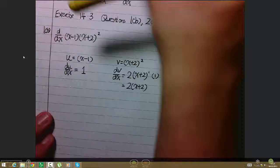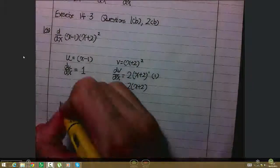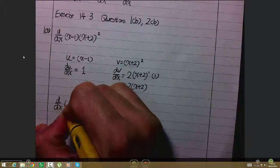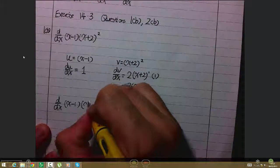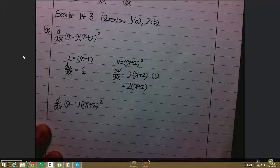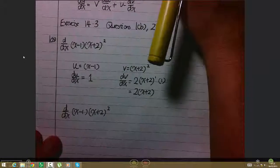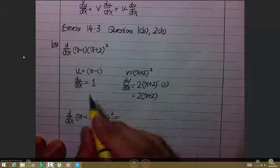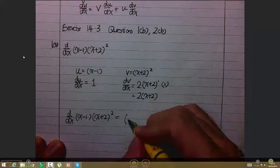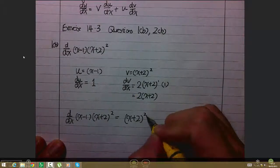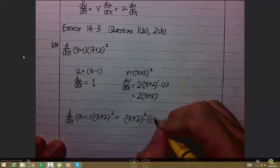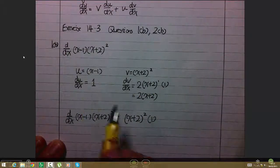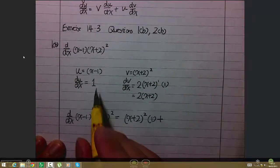Then, carrying on with this question, to differentiate (x-1)(x+2)² with respect to x, I apply the product rule formula. Plugging in the values: v times du/dx, which is 1, plus u times dv/dx.